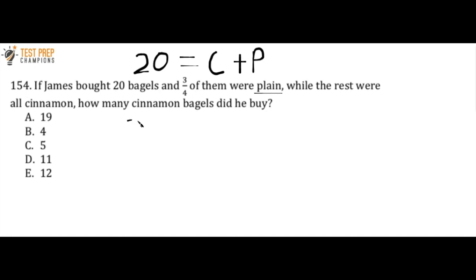So what I would do is I would do 20 times 3 over 4. And if you just do this in your calculator, what you will see is that 20 times 3 over 4 equals 15. So we know that P equals 15. So I can rewrite this as 20 equals C plus 15. So at this point, it's just a matter of solving for C.